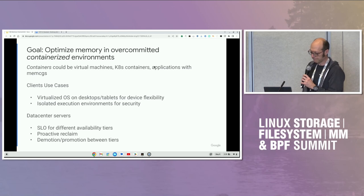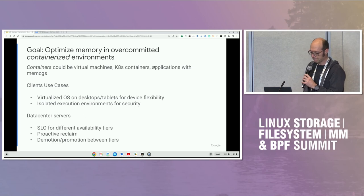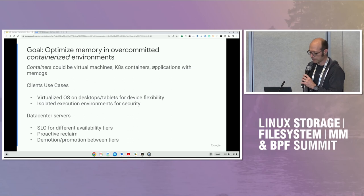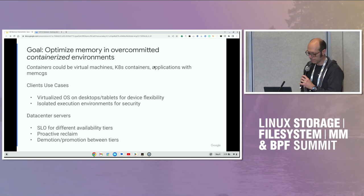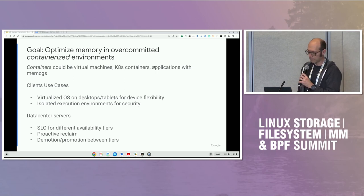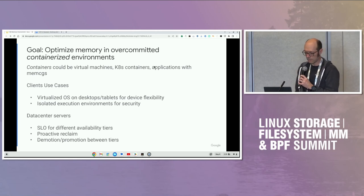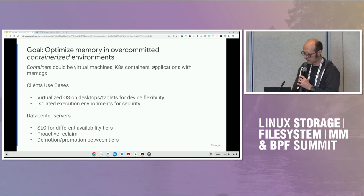A common technique is proactive reclaim, where it reclaims memory ahead of memory pressure and makes apparent the amount of actually free memory on the machine. Some client use cases include a virtualized OS on a desktop and tablets, or isolated execution environments for security. The data center servers are more concerned about SLOs for different availability tiers, proactive reclaim, and the motion promotion between tiers.